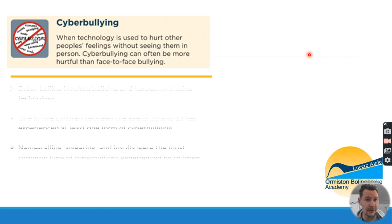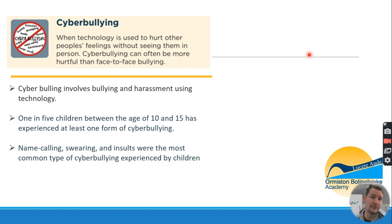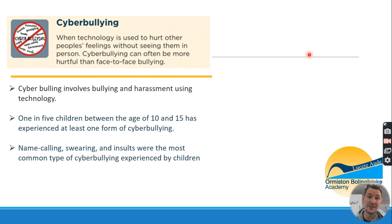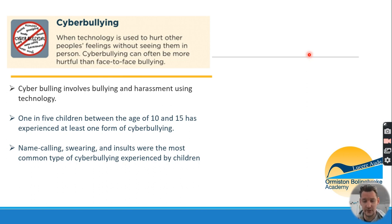Moving on to cyberbullying — the definition is repeated online unkind behaviours; negative behaviours online that are repeated are classed as cyberbullying. Statistics show that one in five children between the ages of 10 and 15 say they've experienced at least one form of cyberbullying. Common examples include name calling, swearing, and insults.